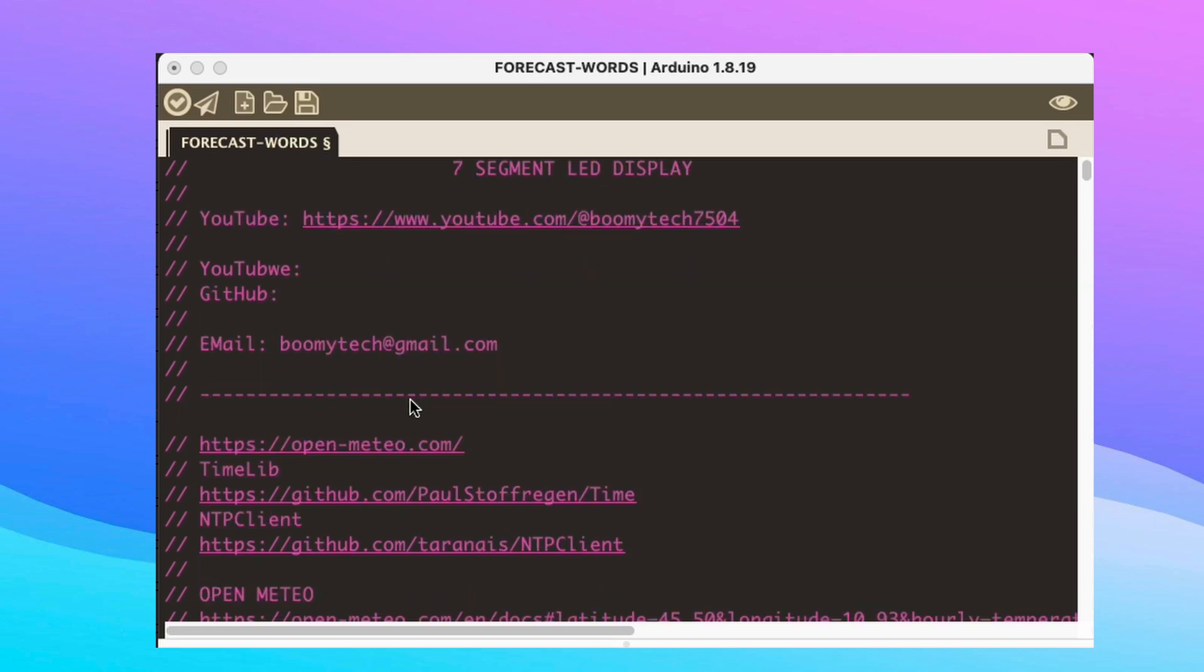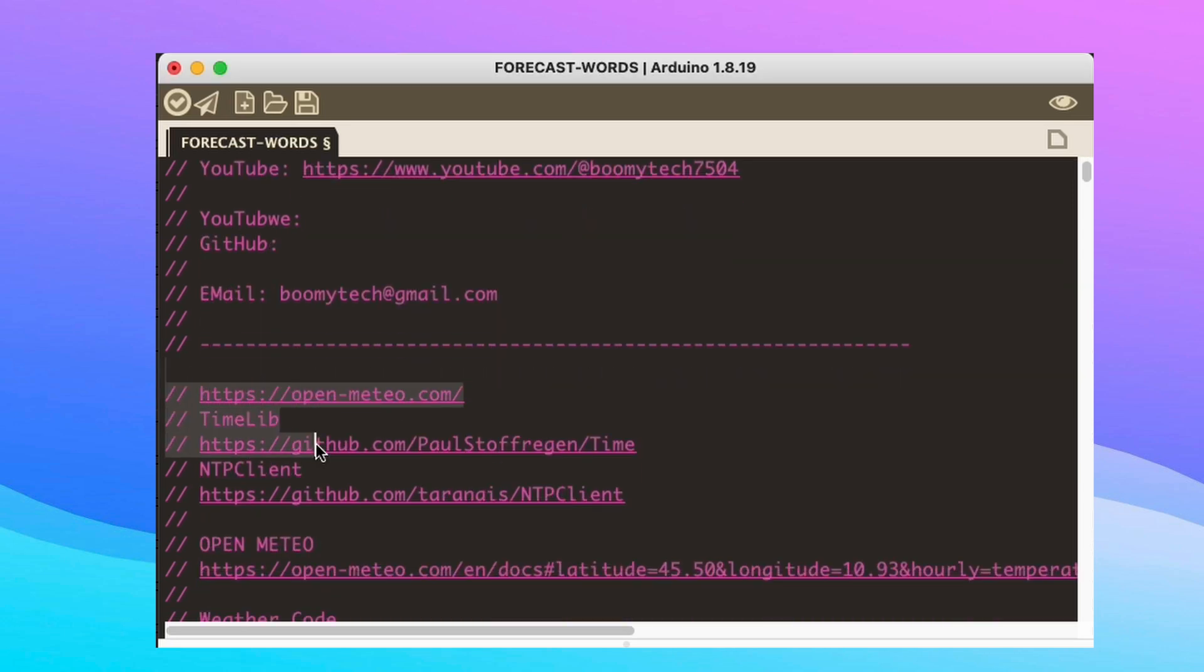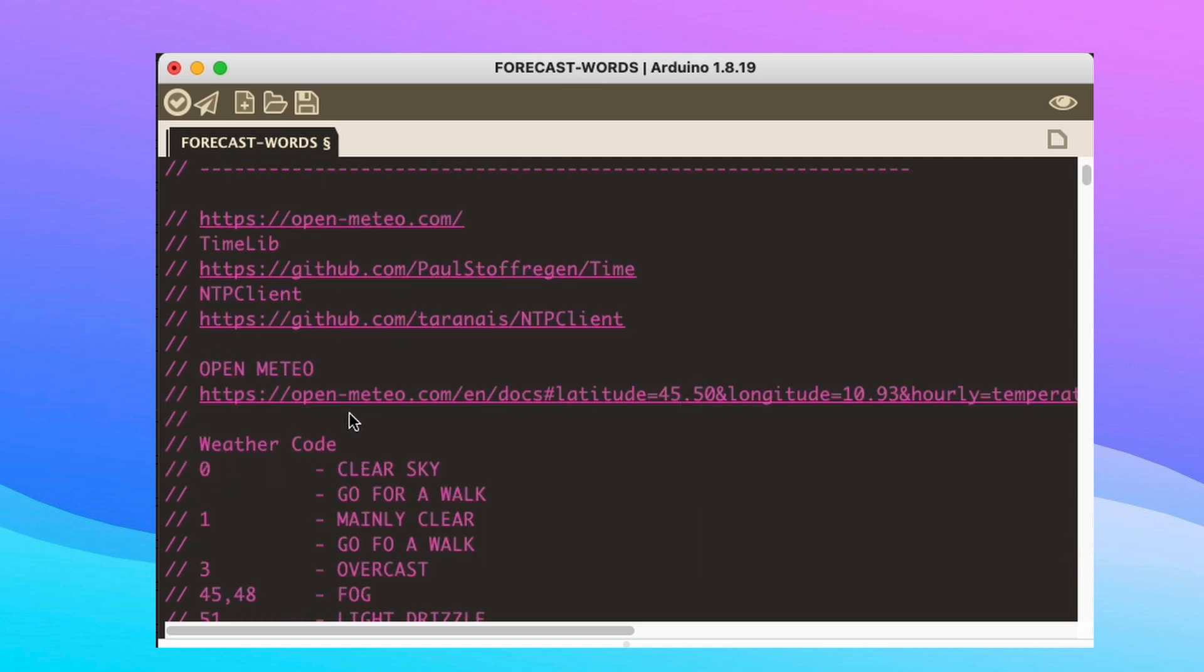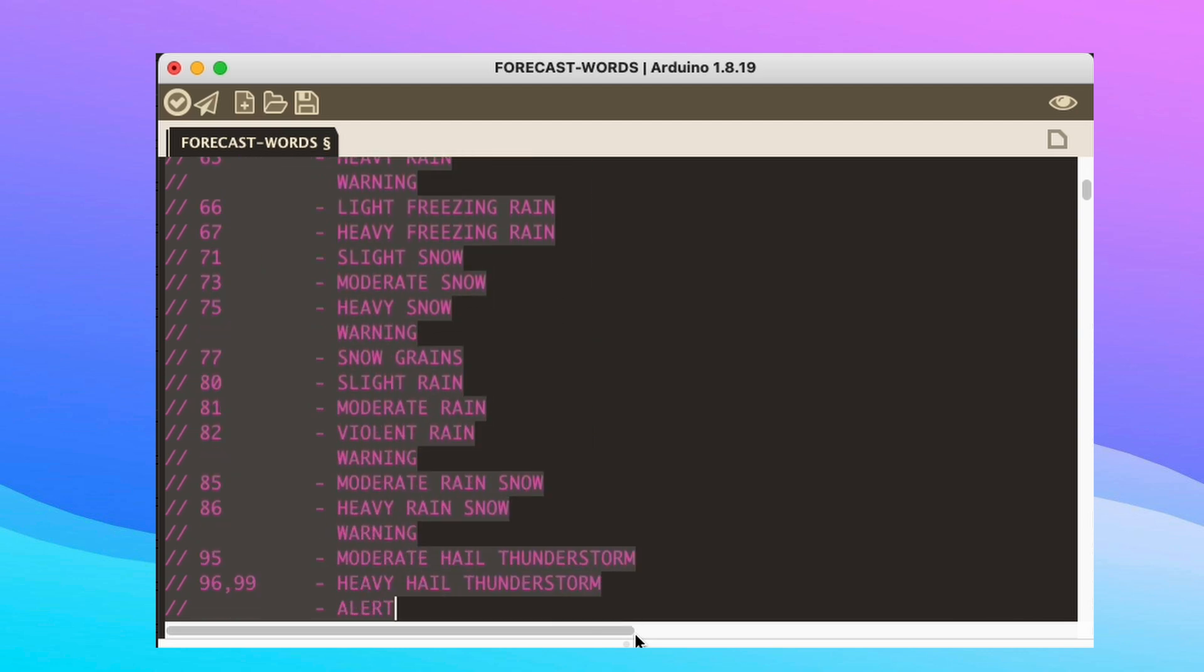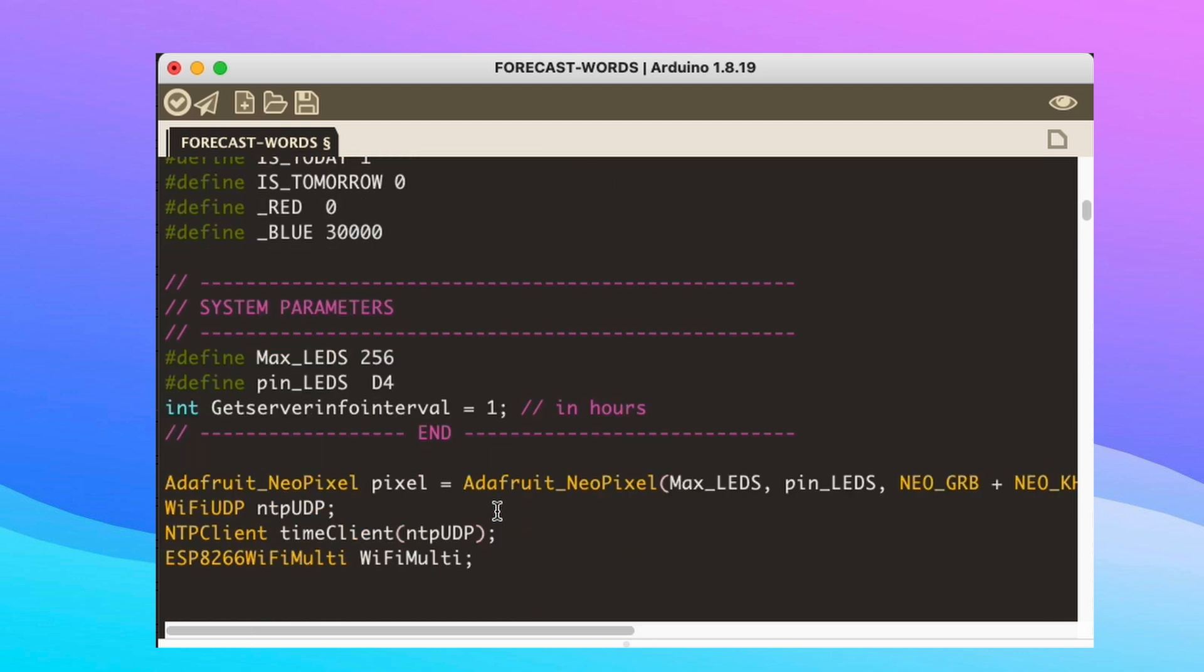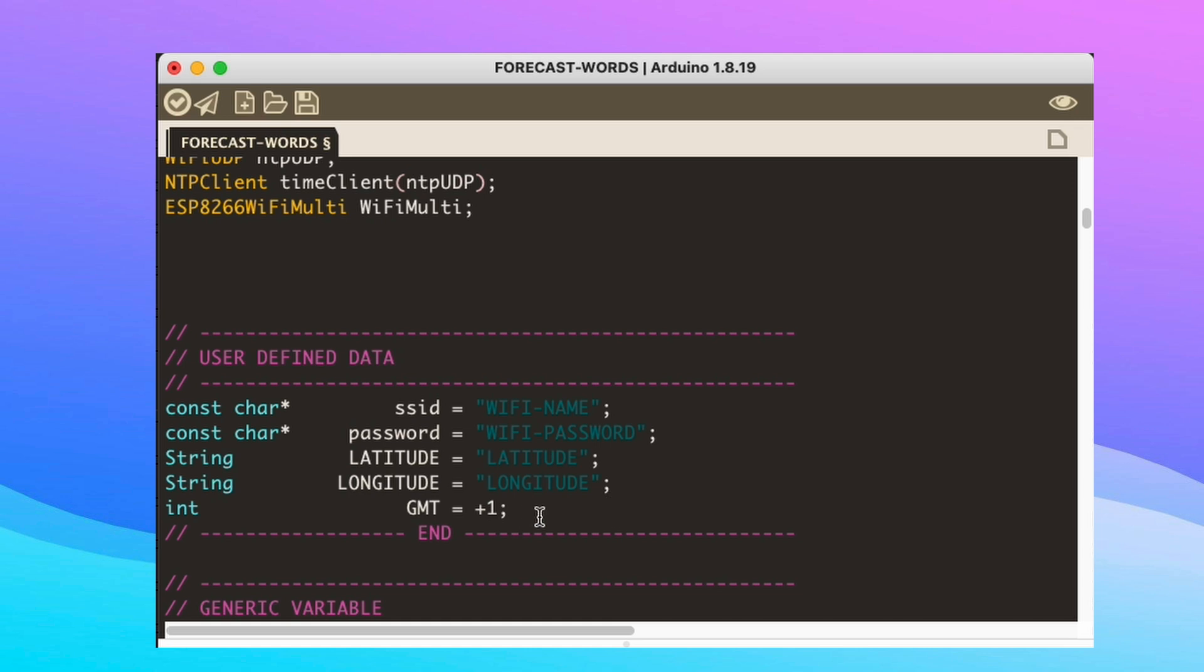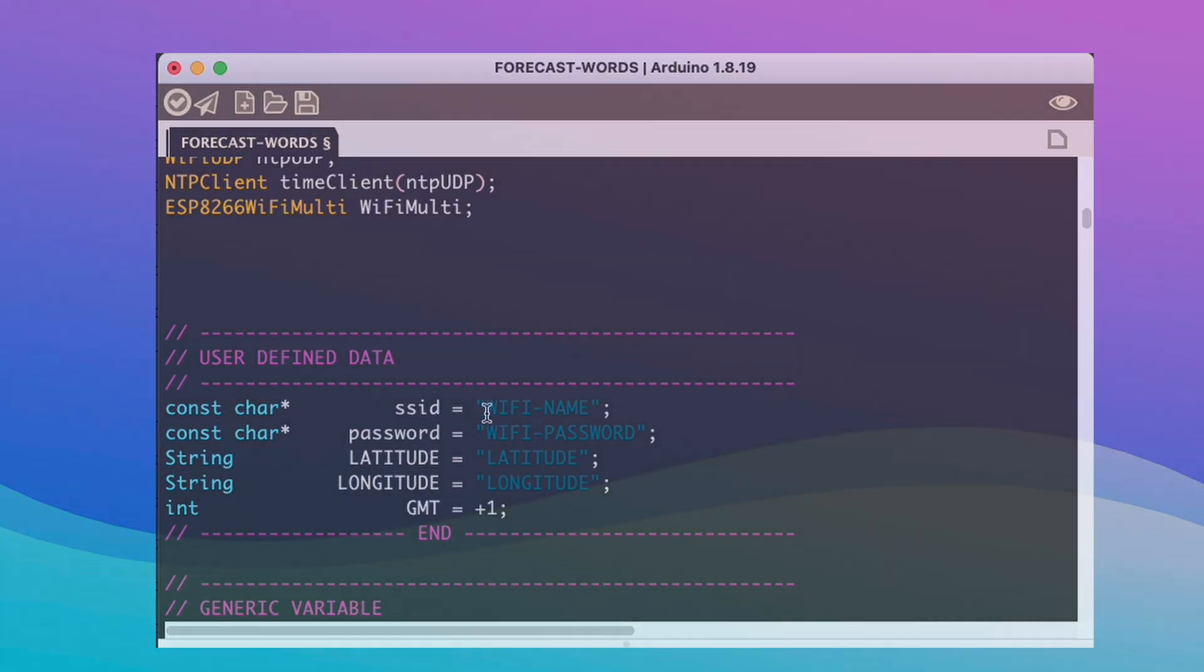I put the link in the description of the source code that you can load into the Arduino IDE. You need to download these libraries. The website that will provide us information on the weather forecast is OpenMeteo. These are the codes that OpenMeteo website gives us back. Fill in the data of your Wi-Fi network name and password correctly. Enter longitude and latitude. And that's all.